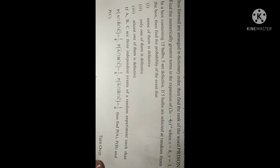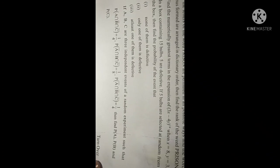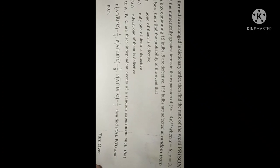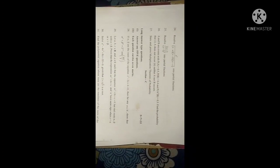Question 35: If A, B, C are three independent events of a random experiment such that P(A ∩ B̄ ∩ C̄) = 1/4, P(Ā ∩ B ∩ C̄) = 1/8, P(Ā ∩ B̄ ∩ C̄) = 1/4, then find P(A), P(B), and P(C).